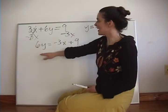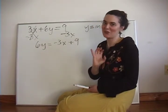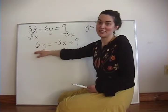Now that we've gotten 6y by itself, we can completely get y by itself if we divide both sides by 6.